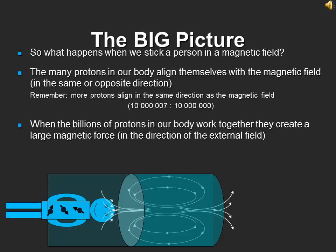Before moving on, let's take a step back and recap. When someone is placed inside an MRI machine, they are actually placed inside a giant magnet and surrounded by a magnetic field, which affects the many protons inside of them. These protons will align themselves with the magnetic field. Remember, more protons will align in the same direction as the magnetic field rather than in the opposite direction. The billions of protons working together will thus produce a significant magnetic force in the same direction as the external magnetic field.